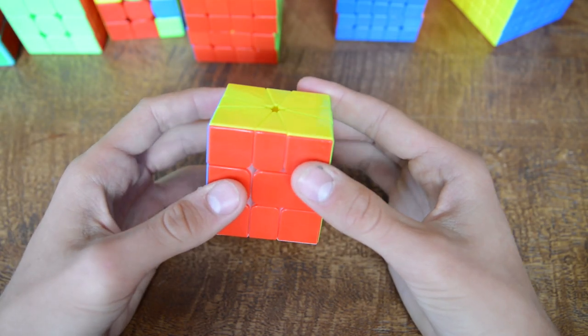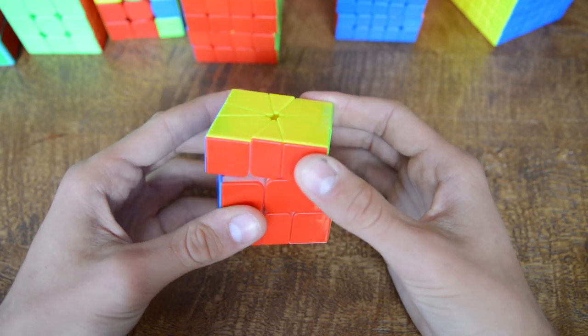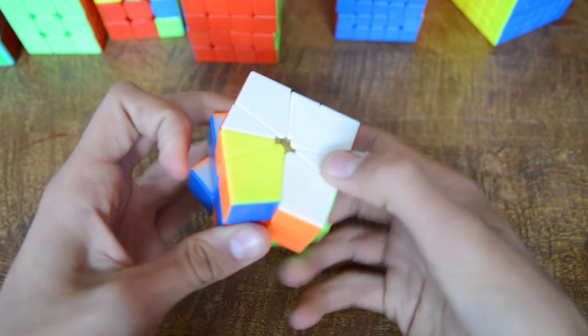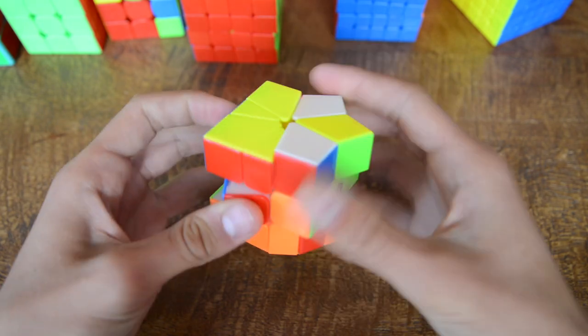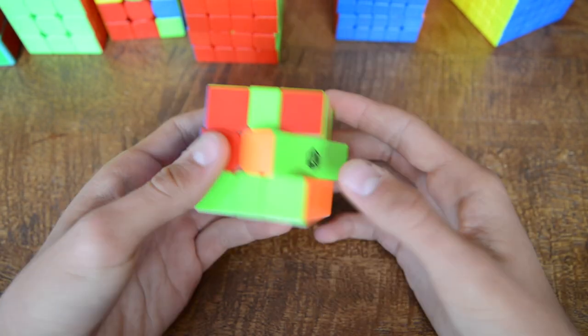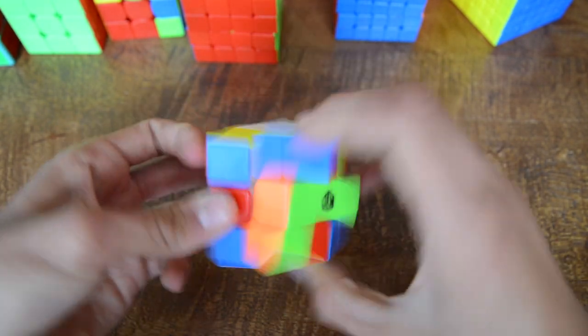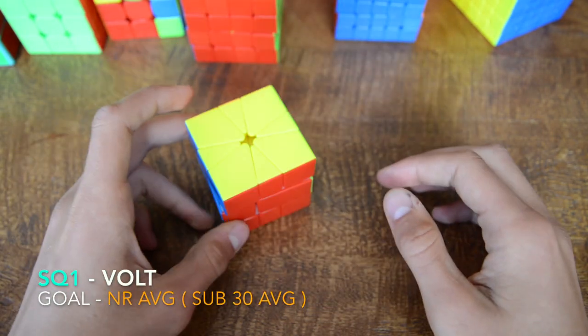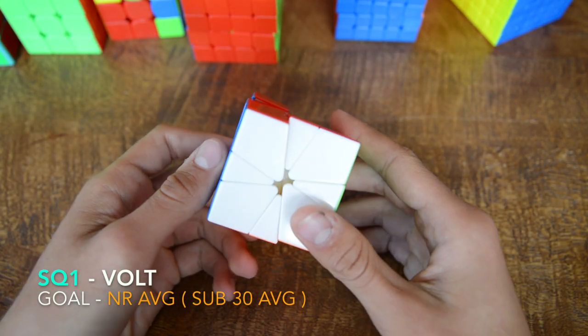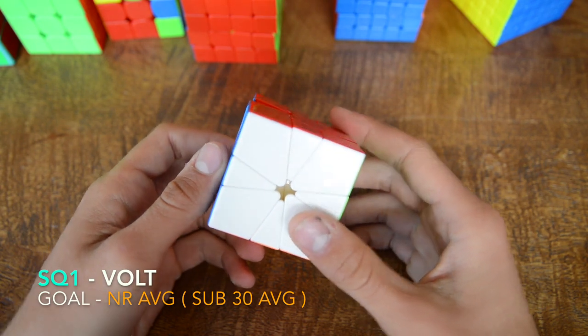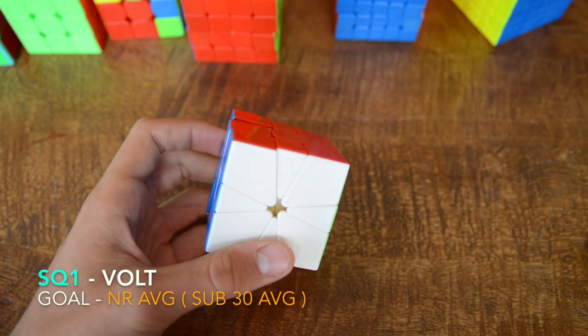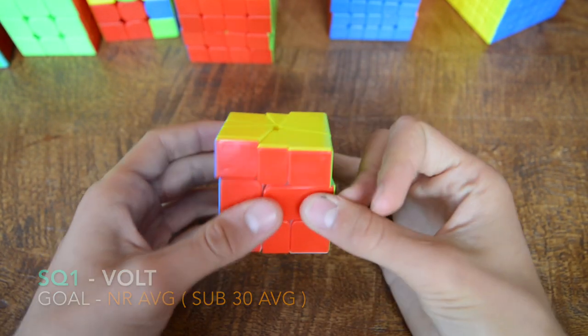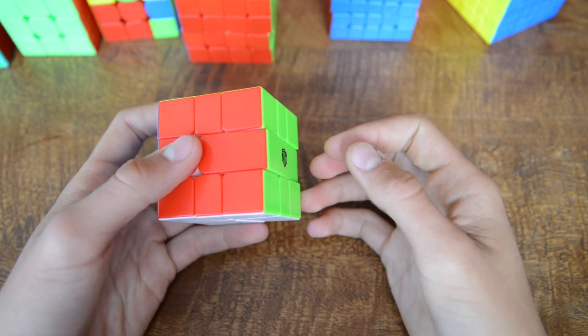This is the X-Men Volt, the YJ Volt square one. This is my new main. I mean, I just unboxed it. I've done like 300 solves on this and I still want to practice a little bit before the competition. My goal is to get an NR average and by that I mean the first ever Latvian sub 30 average in competition in square one. We'll see if that happens.